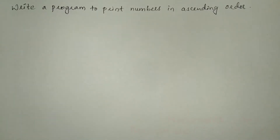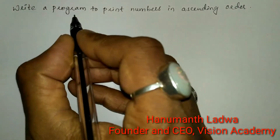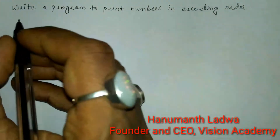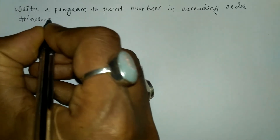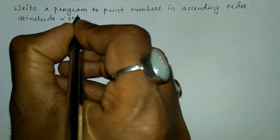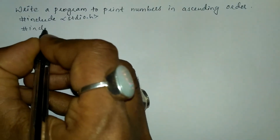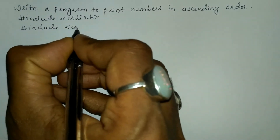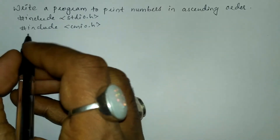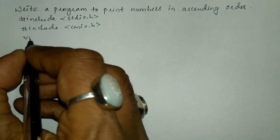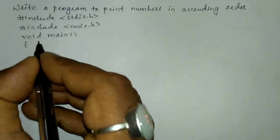Hello and welcome to Vision Academy. My name is Hanmat Ladwa and in this video we are going to write a program to print numbers in ascending order. Let us write the preprocessor directives: hash include in angular brace, standard input output dot h header file, and the next preprocessor directive is hash include in angular brace, console input output dot h header file. Now we are going to write the void main function with curly open brace.